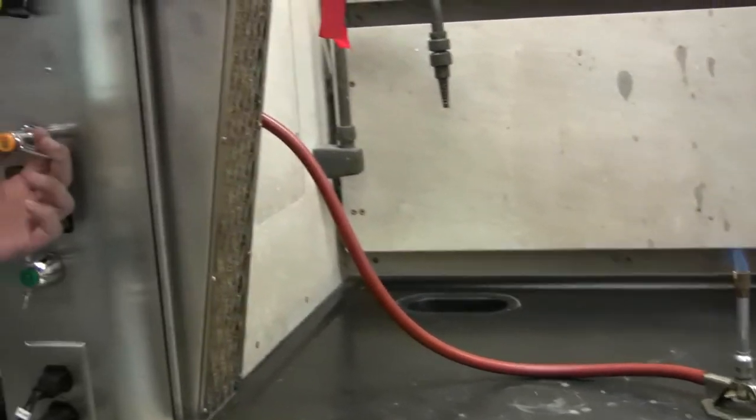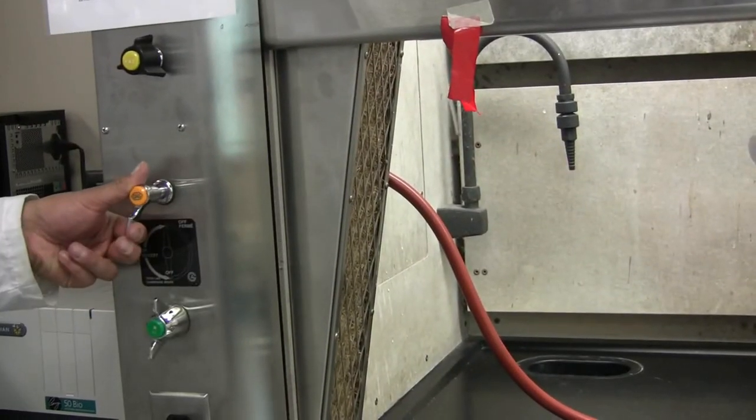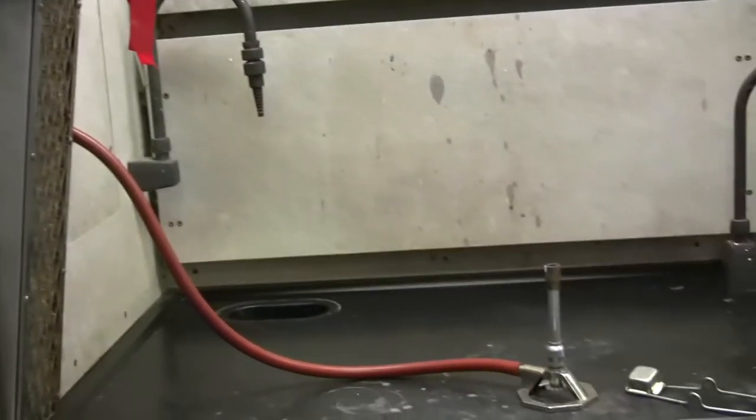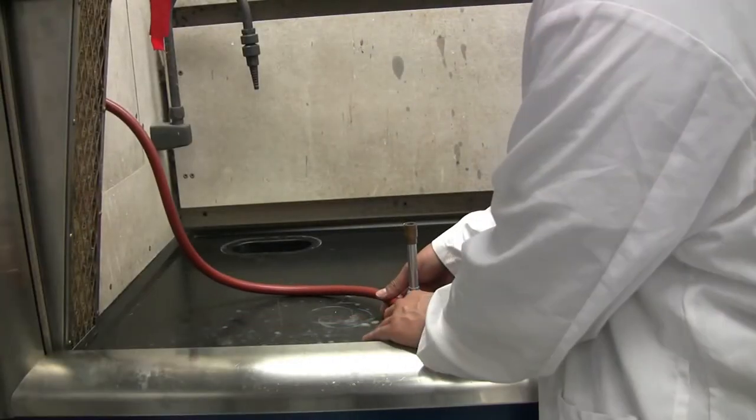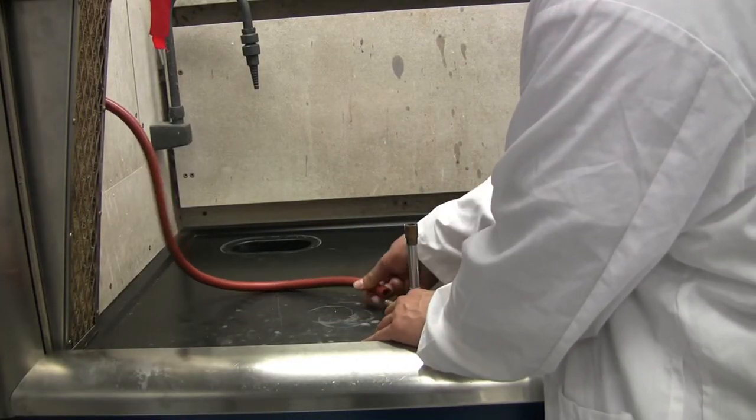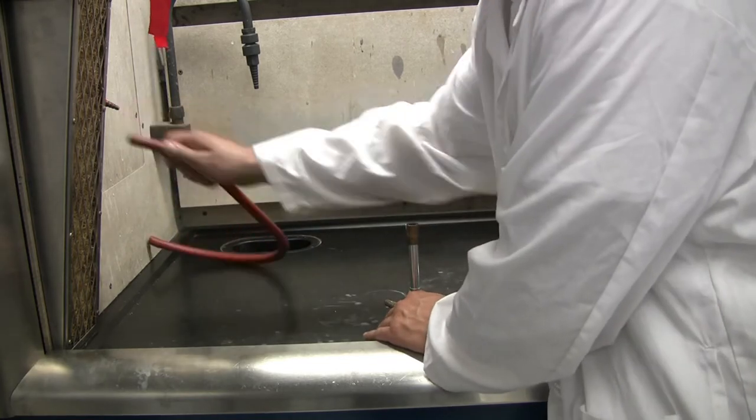Once finished with the Bunsen burner, turn off the gas and allow the line to bleed out. This will burn off excess gas trapped in the line. Disconnect one end of the rubber hose from the Bunsen burner and then the gas nozzle.